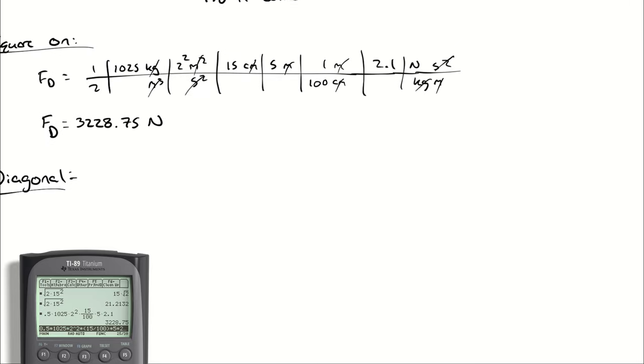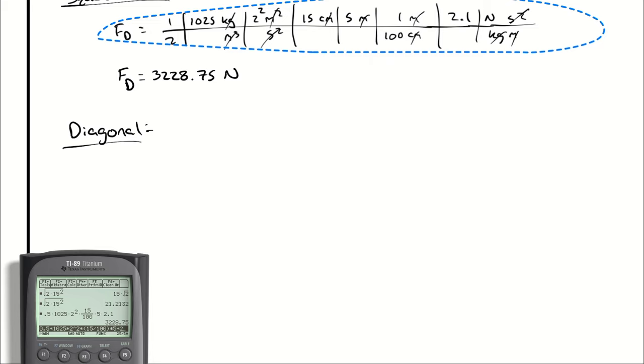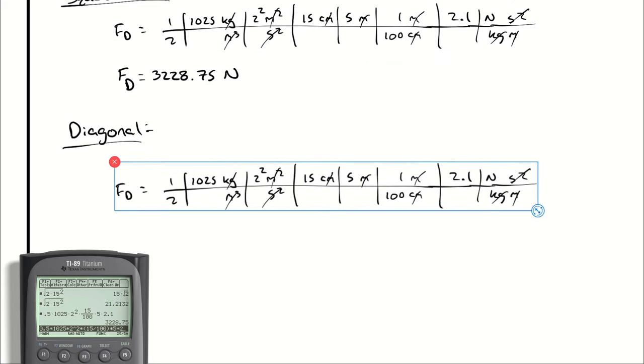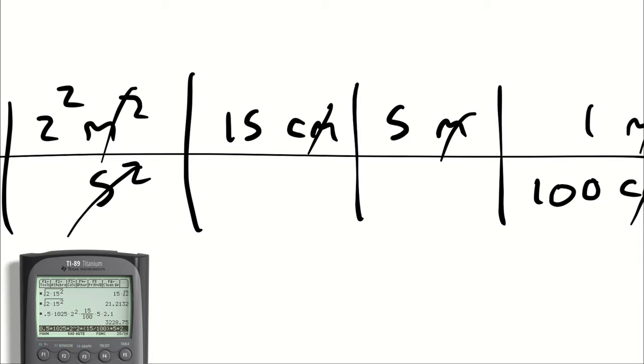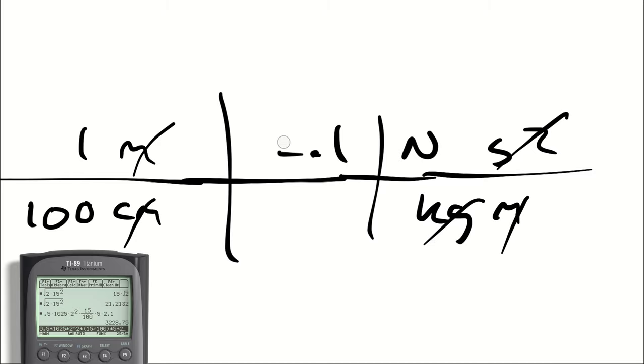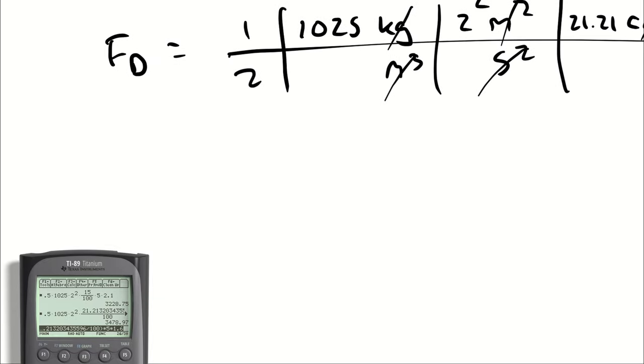And then for the diagonal case, which is going to start the same, the only difference is that we use a coefficient of drag of 1.6 and a cross-sectional area of 5 meters times 21.21 centimeters. So with the diagonal orientation, we get 3,478.97 newtons. So let's call that 3479.